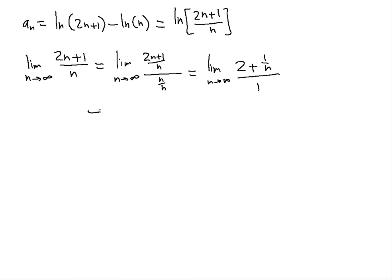Now if we take the limit and evaluate for infinity, it's going to give us 2 plus 1/n. So we're going to have 2 plus 1/infinity which gives us 2 plus 0, that gives us 2.